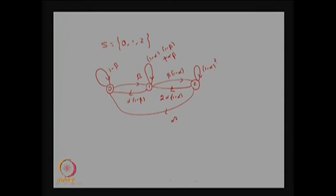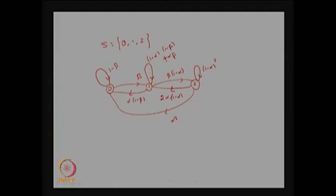The state transition diagram is a pictorial view of the one-step transition probability matrix. It gives information only about the transition probabilities — not about the initial probability distribution. When the DTMC is time homogeneous, it shows the probability of moving from one state to another. This diagram is very useful when studying properties of the Markov chain and for finding the limiting distribution — the distribution of Xn as n tends to infinity — including whether a limiting distribution exists and whether it is unique.